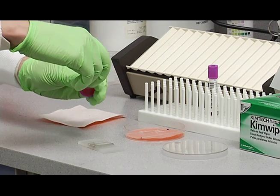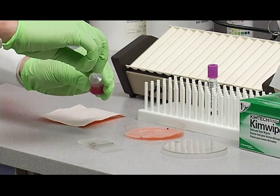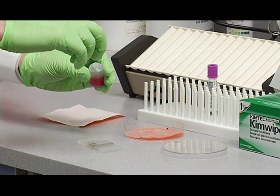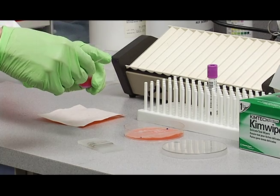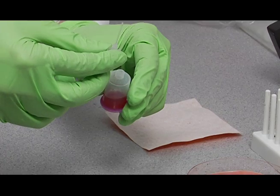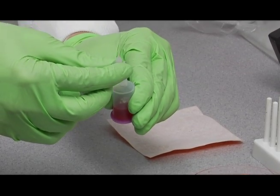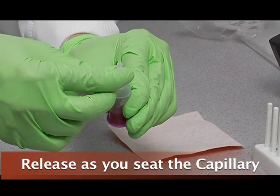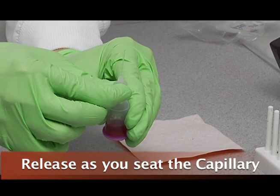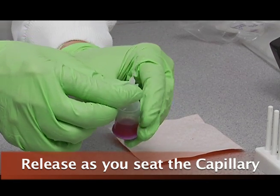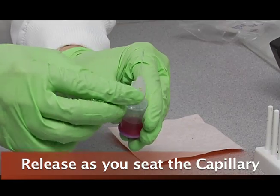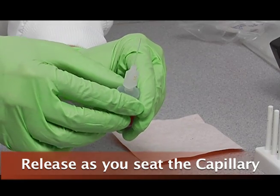Then remove the capillary. There'll be a little bit, sometimes a little bit of diluted blood in here. There isn't in this particular case, but if there is, you don't want that to squirt in your eye. So what you want to do is squeeze the reservoir and then release it as you seed it in, and it will suck the liquid back into the vial.